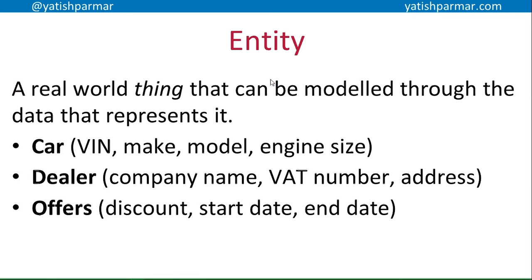A dealer entity would be modeled through the company name, VAT number, address, telephone number. Then there's 'offers.' You can see that car and dealer are concrete, tangible things you can touch. Sometimes an entity might be something abstract, but it still exists and can be modeled through data — because an offer can be represented by the discount, the start date, the end date, the products it applies to, et cetera.